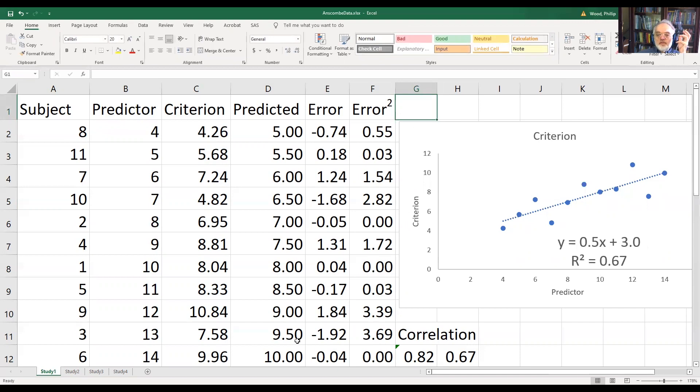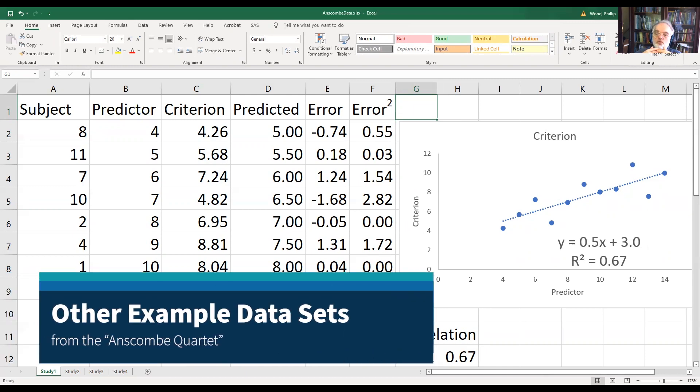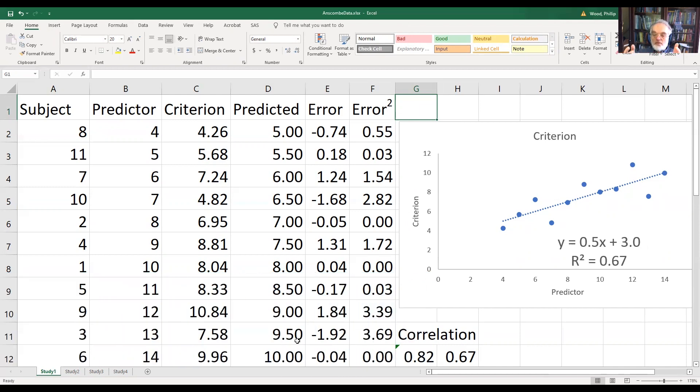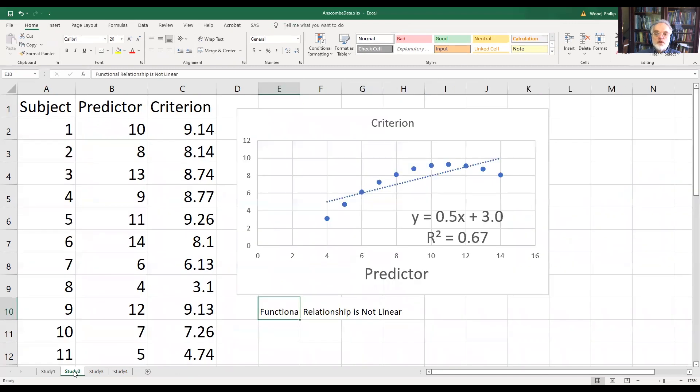Now, these data sets here are kind of nice examples because they show you the fact that correlation coefficients can be deceptive. It's not enough just to look at a number and say, well, here's the strength of the association. So let's take a peek at study two. And I've taken the liberty of making some charts for you.